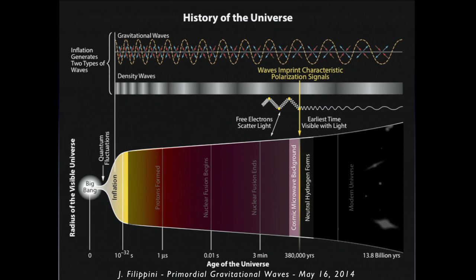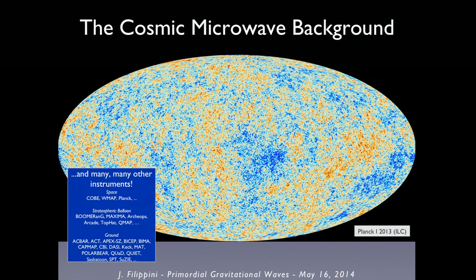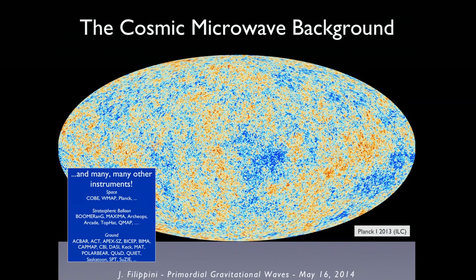We're looking for the imprints of these gravitational waves from inflation on that last scattering surface. This is the beautiful picture from the Planck satellite, which made the front page of the New York Times about a year ago. This shows the tiny, tens of microkelvin hot and cold spots on the otherwise uniform 2.7-kelvin background radiation of our universe — the direct glow of the hot Big Bang. There are many experiments over decades that have studied this — satellites, stratospheric balloons, ground-based experiments — leading to beautiful images like this.